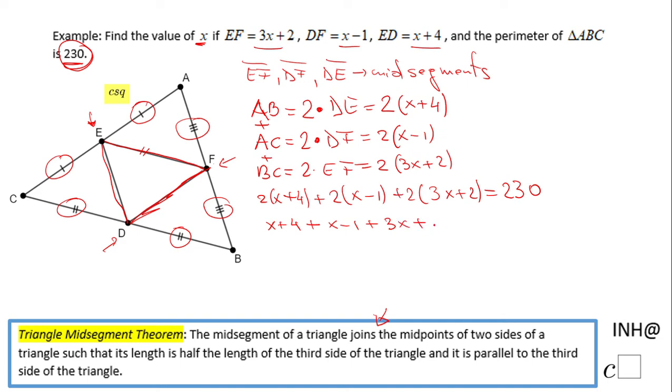This is another property you can write from the beginning: thinking about the perimeter of the small triangle DEF, it's half of the perimeter of the original triangle, the large triangle.